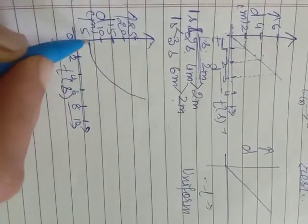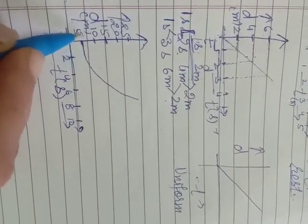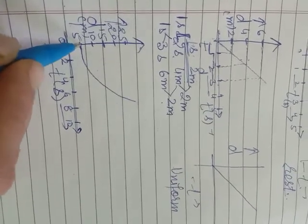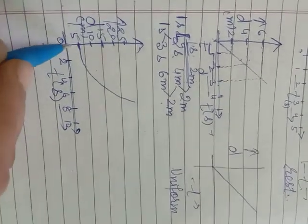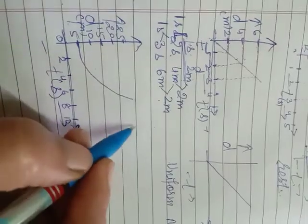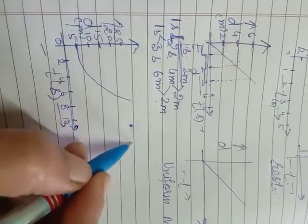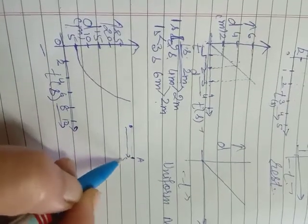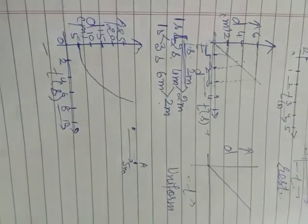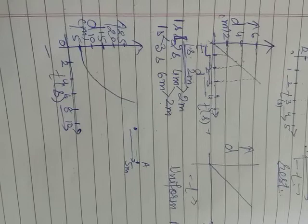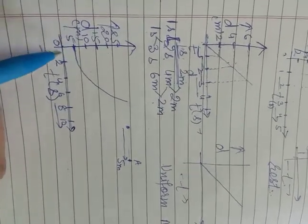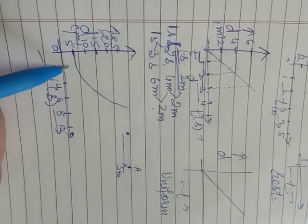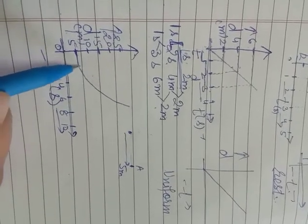See — if our graph is starting from this axis, it means that when time is 0 the object is already at 5 meters from us. Suppose I am standing somewhere here, so the object is already at a distance of 5 meters from me. So at 0 seconds, the distance is already at 5 meters.